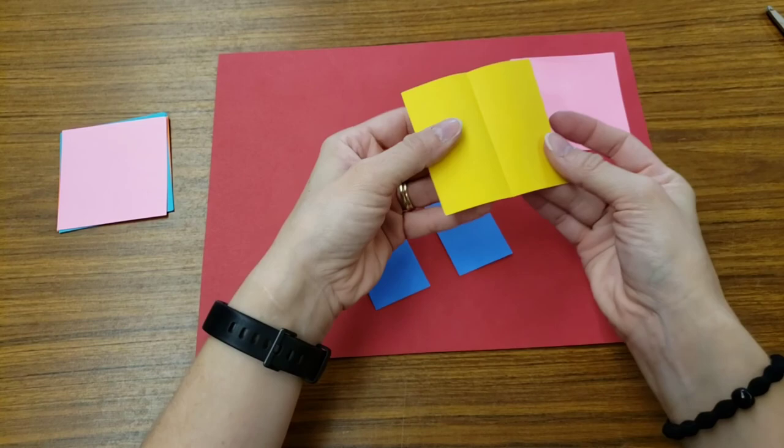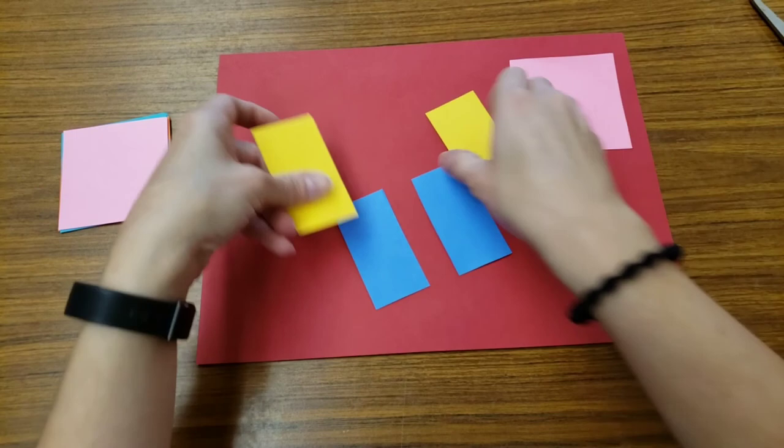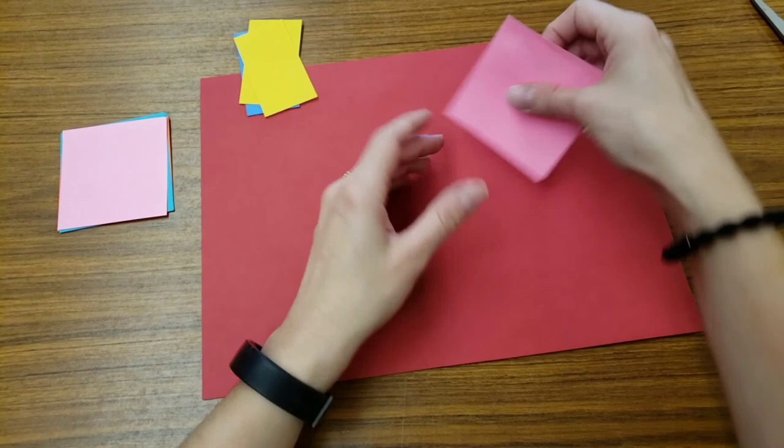Let me do it one more time. Fold it in half, open, cut on the fold. Now I have some rectangles to work with.